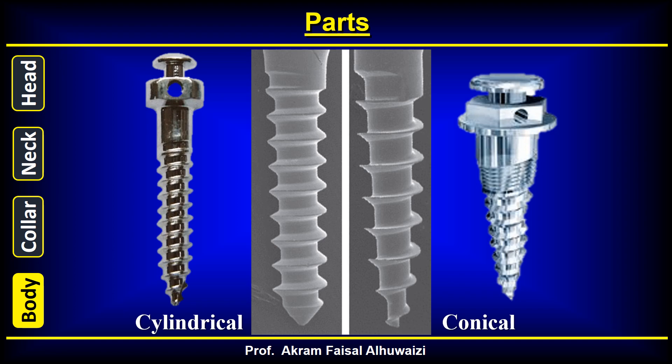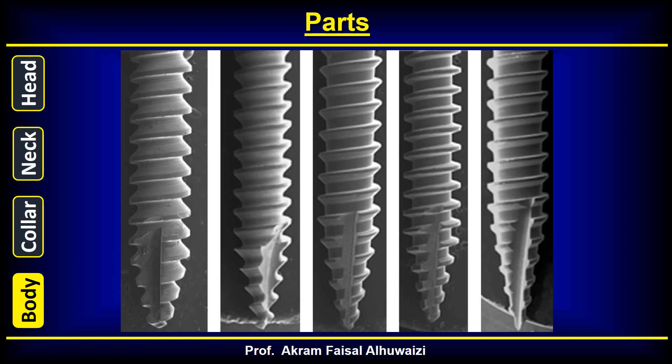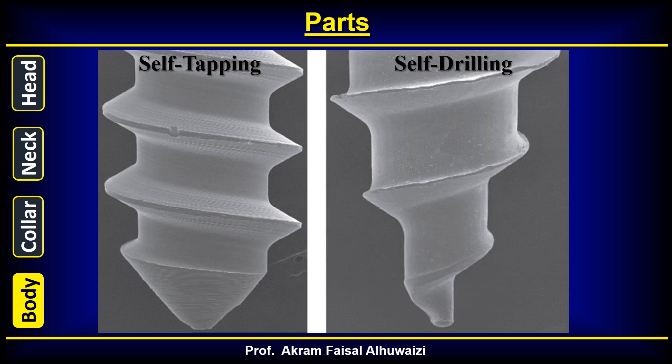There are two types: the cylindrical and the conical, and there's controversy about which provides less stress and has a higher success rate. The flutes and threads can differ in shape — buttress, reverse buttress, rounded, and so on, depending on the manufacturer. Regarding the tip, there's the self-tapping type, which is blunt, and the self-drilling type, which is sharp.